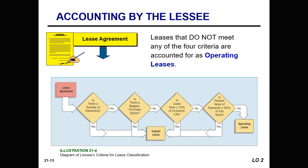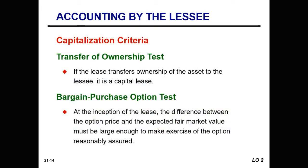Here's a nice little pictograph that will show you how to determine whether it is a capital lease or an operating lease. By and large, if ownership of the asset is going to transfer, it's going to be a capital lease. The bargain purchase option is a provision that allows a lessee to purchase the leased property for a price that is significantly lower than the property's expected fair value.